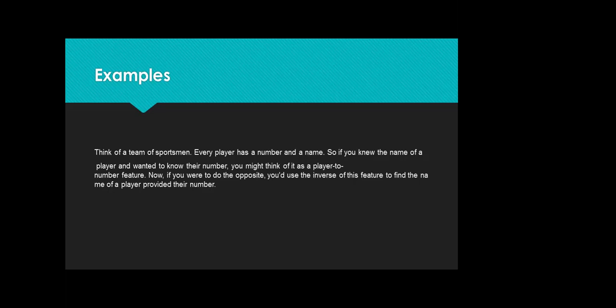Another example: a team of sportsmen. Every player has a number and a name. So if you know the name of a player and want to know the number, you might think of it as a player-to-number feature. Now if you were to do the opposite, you'd use the inverse of this feature to find the name of a player provided their number.